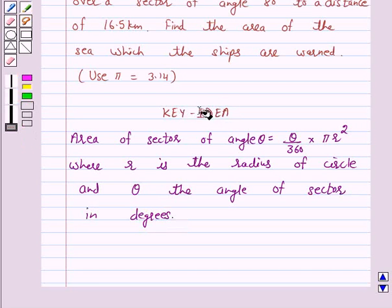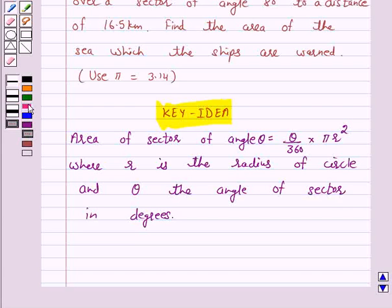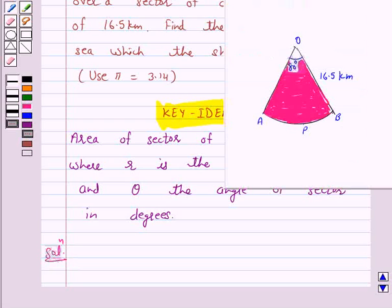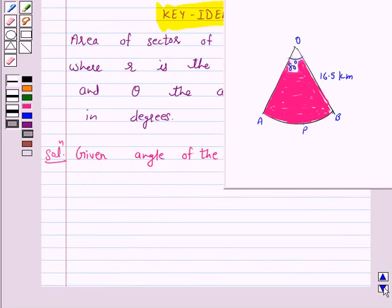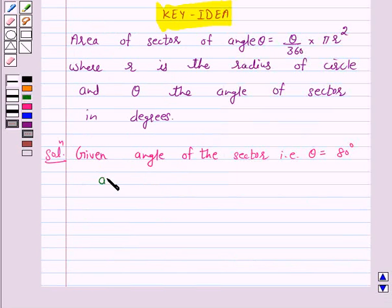We will take the help of this key idea to solve the question. So let's start the solution. According to the question, we are given angle of the sector theta is equal to 80 degrees and radius of this sector r is equal to 16.5 kilometers.